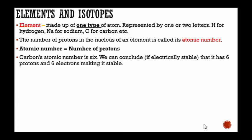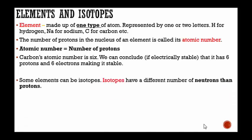Carbon's atomic number is six. That tells me right away that on the periodic table I'm going to find carbon on number six. We can conclude, if it's electrically stable, that it has six protons and six electrons, making it stable, making it neutral, having no charge. Because the six protons and six electrons, the negative and the positives cancel each other out. It's going to be neutral, no charge.